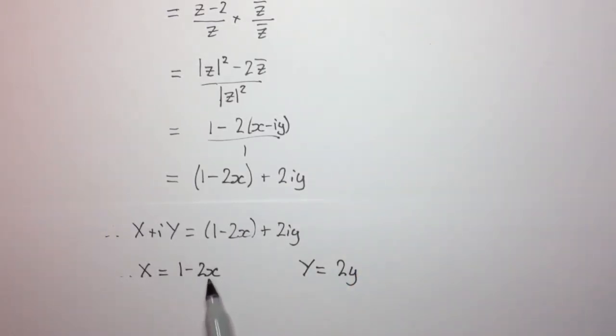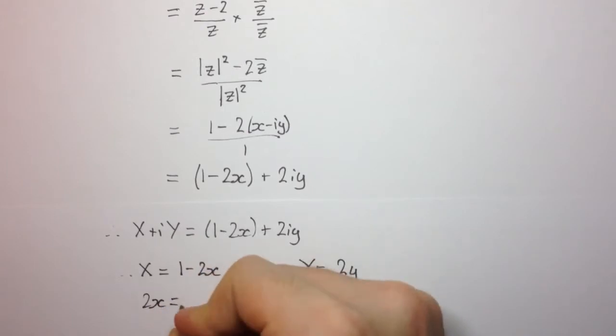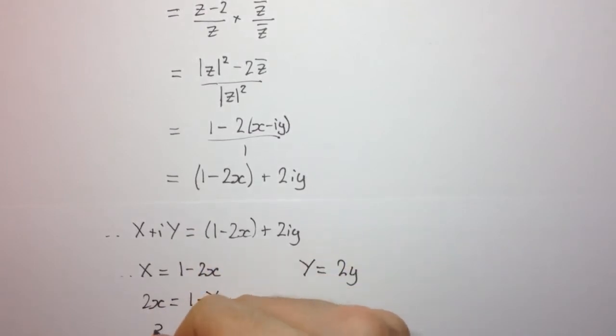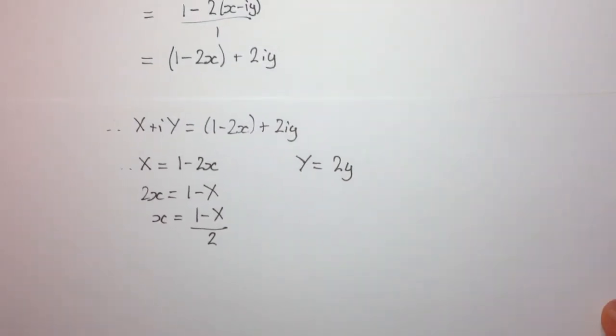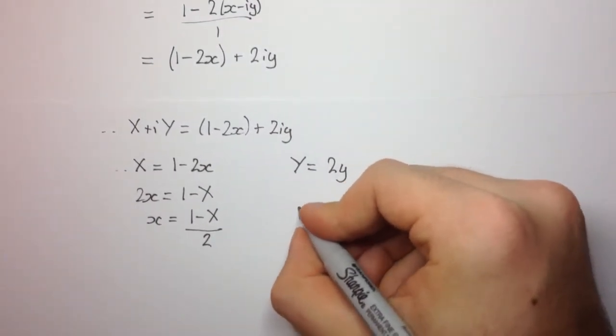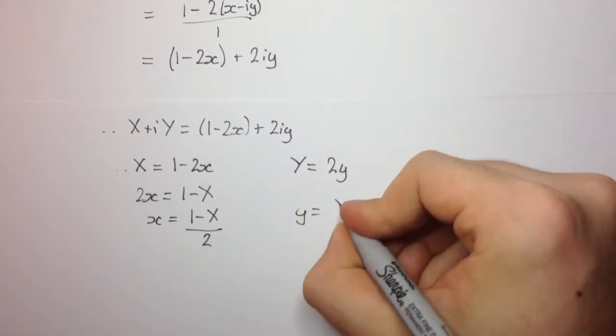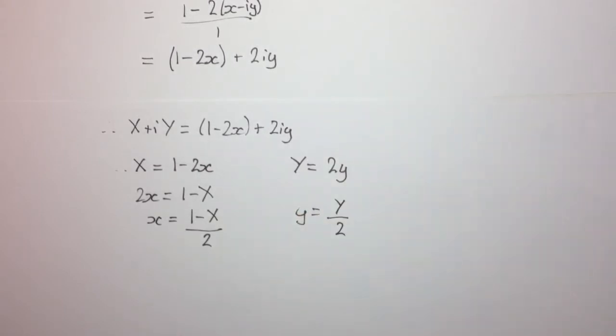Now, let's make little x and little y the subjects of these two equations. We can think of these as parametric equations now for capital Z. So we're going to have, when we rearrange here, we can get 2x equals 1 minus capital X, and so x is 1 minus capital X all over 2. And we have here that y is equal to capital Y over 2.